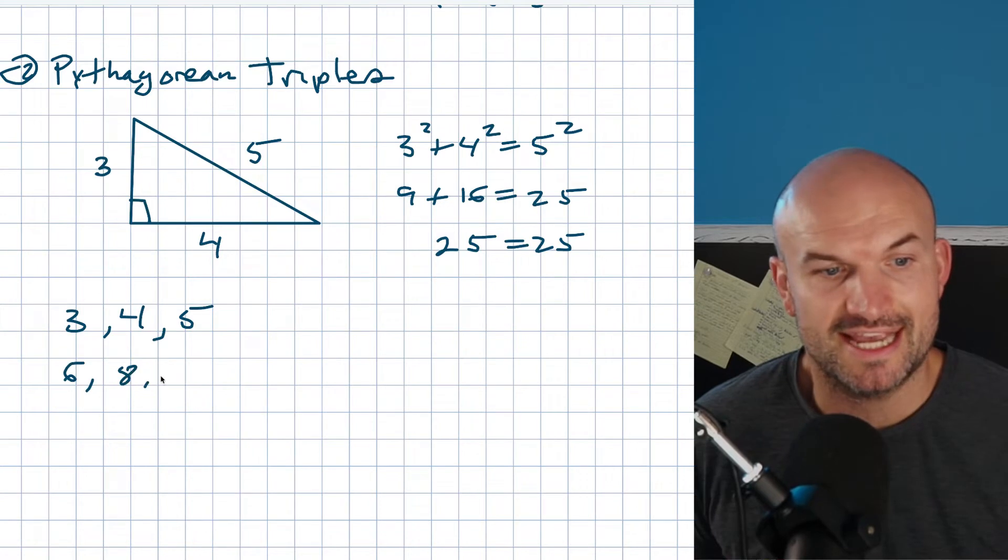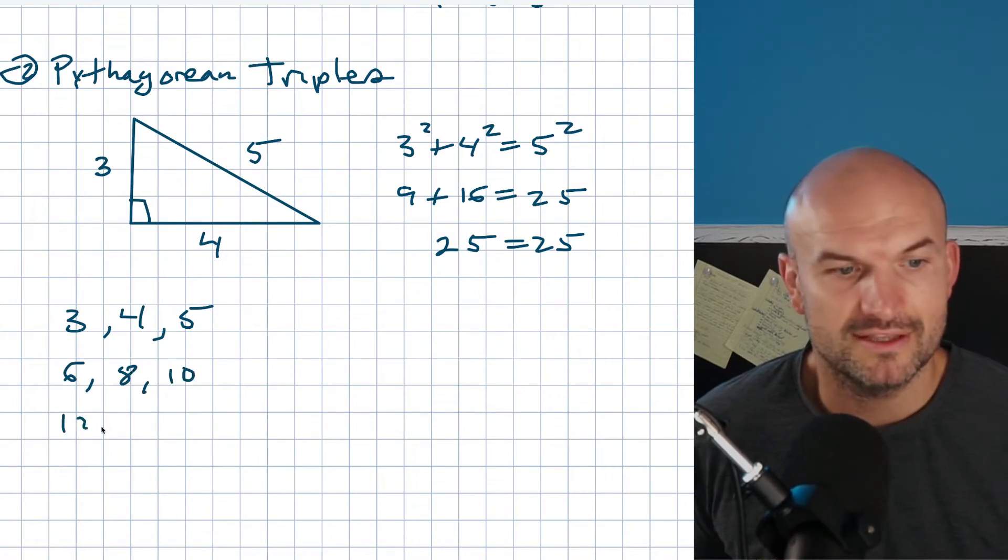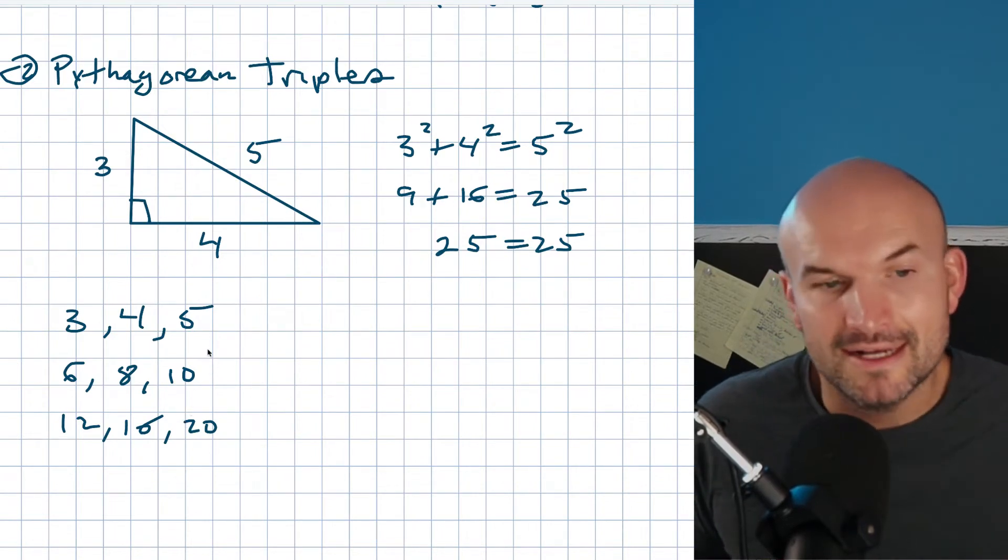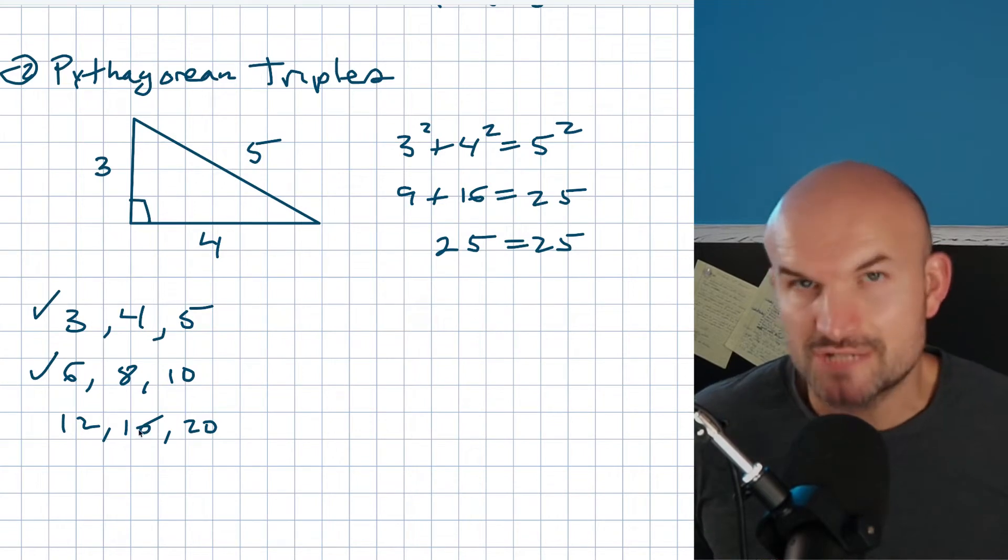Therefore, we can also see the 6-8-10 triangle, the 12-16-20 triangle, and you can keep going on and on. This one's very common, this one's very common, not as much but you will see it.